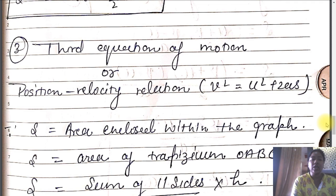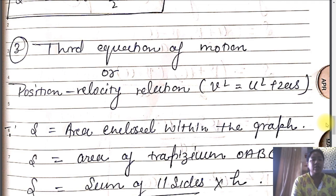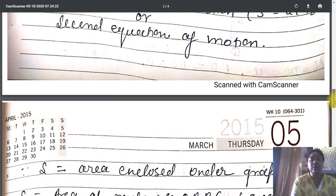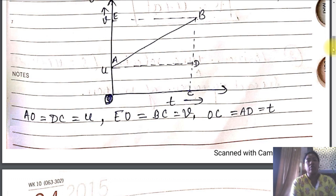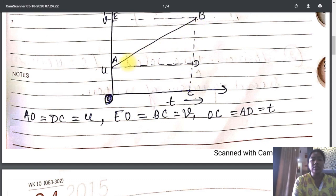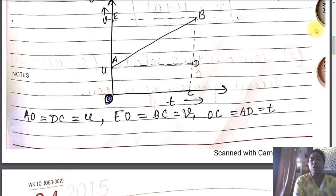From the graph, to calculate the distance traveled by the object, we calculate the area enclosed within the graph. For the third equation of motion, we will not split the area into two parts. Instead, the shape O-A-B-C-O is treated as a trapezium, and we use the trapezium area formula directly.